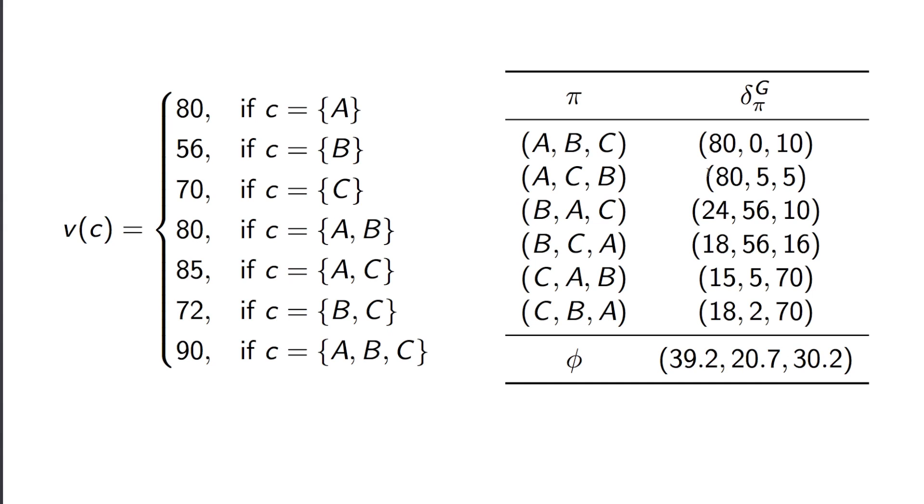And then simply take the averages of the values. Those numbers there don't quite add up to 90 because of numerical rounding. But that would be the bill paid by each player.